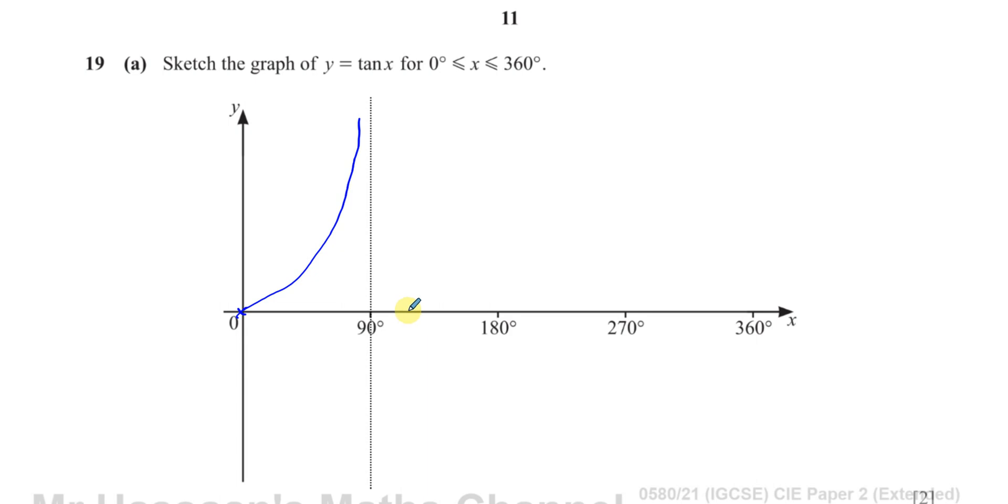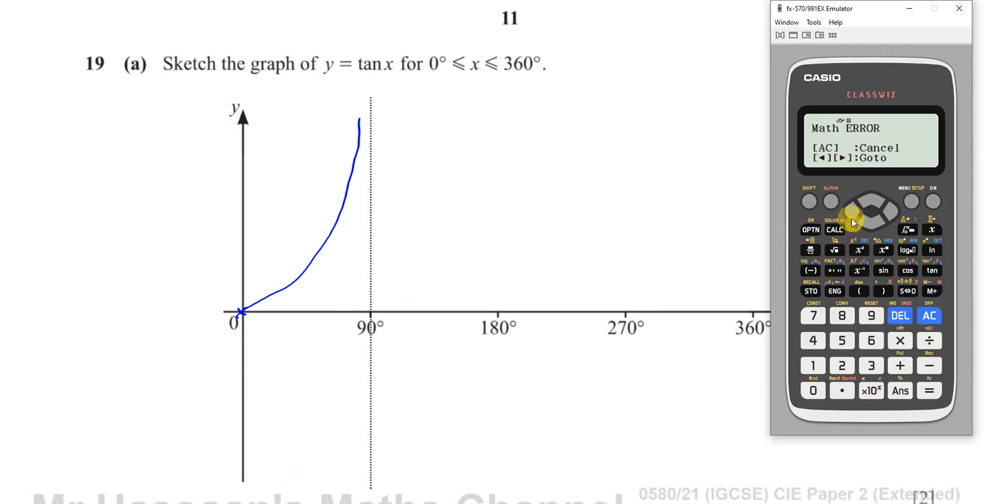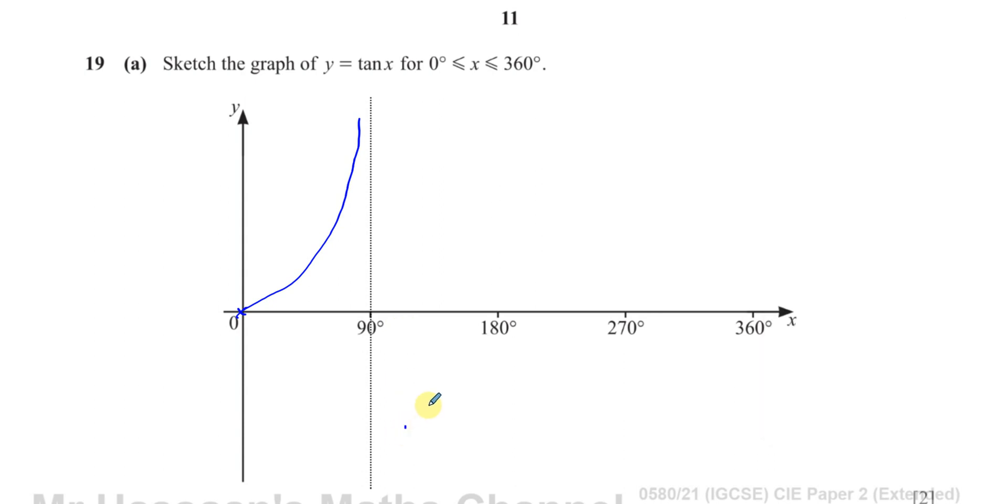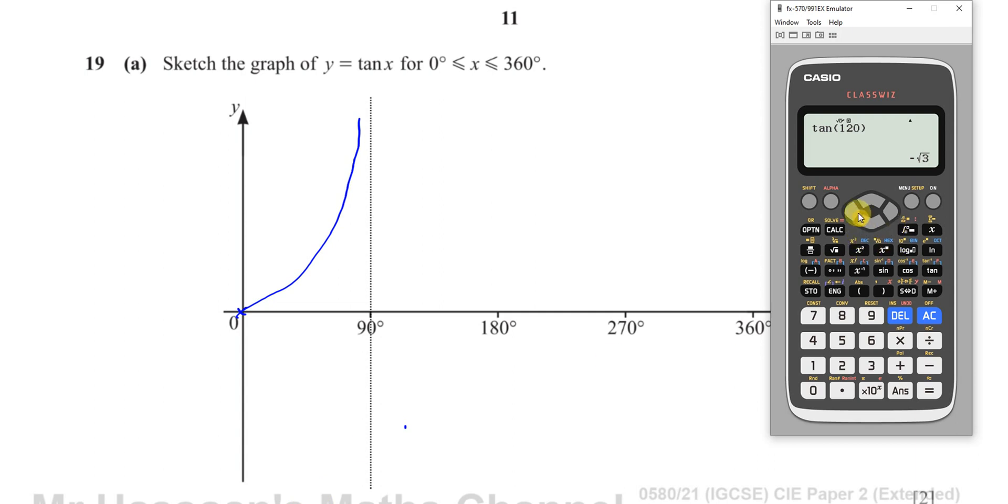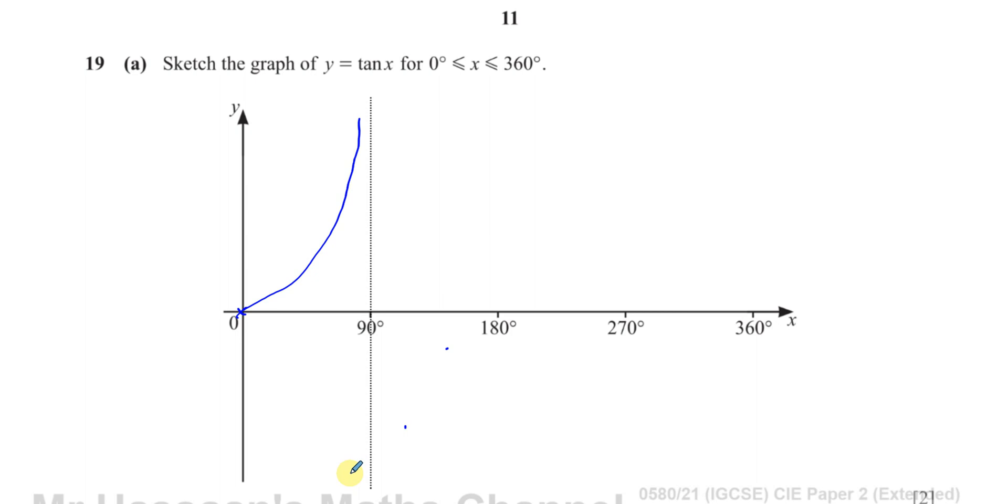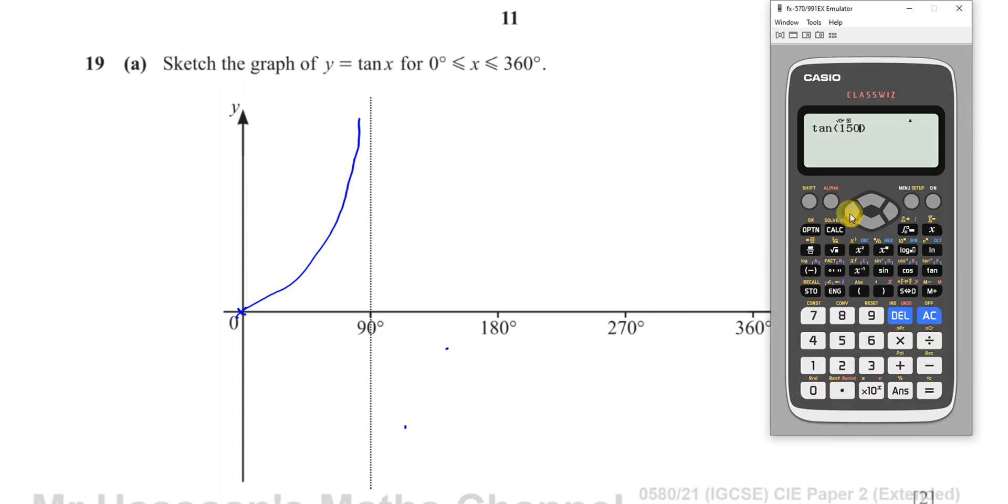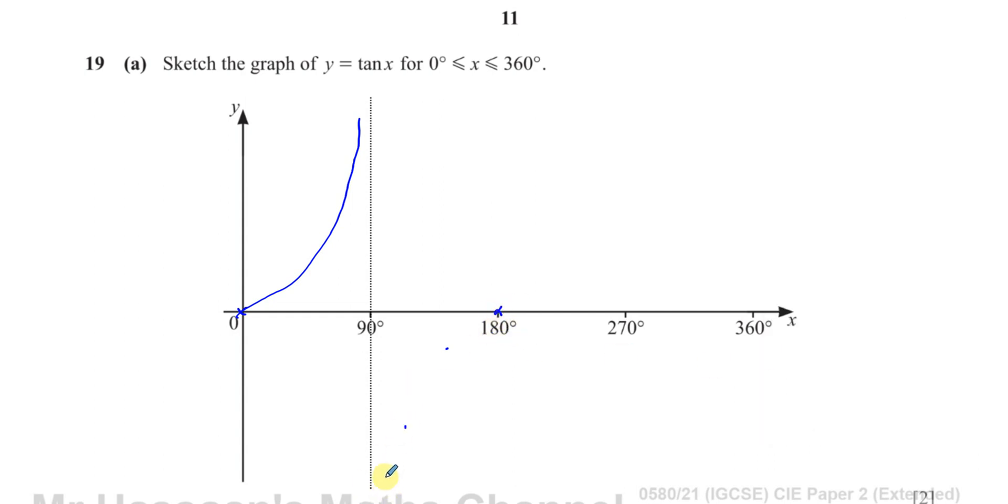If you do the same, if you put tan of 120, you'll see it turns down into the negative side. It's like minus root 3. So it's going to go down here. And then if you put the tan of 150, it gives you minus 0.577. So it's getting closer to the x-axis again, somewhere over here. And if you put the tan of 180, you'll see it goes back to 0 again. So that's in case you forget how it looks like. Otherwise, you should know it looks like this. So it goes like this.